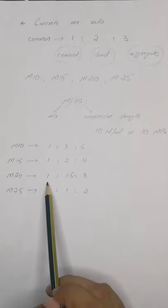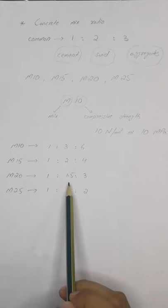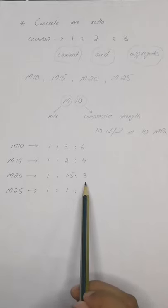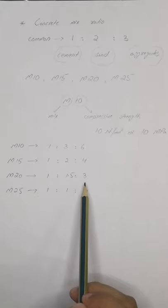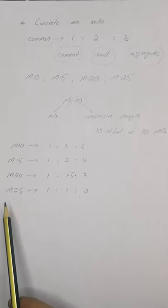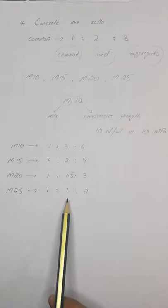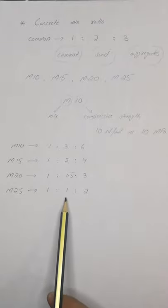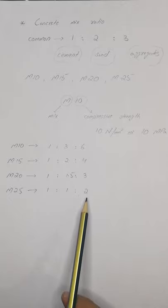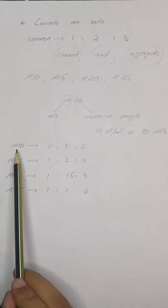For M20, one bag of cement, 1.5 bags of sand, three bags of aggregates. And for M25, one bag of cement, one bag of sand, and two bags of aggregates.